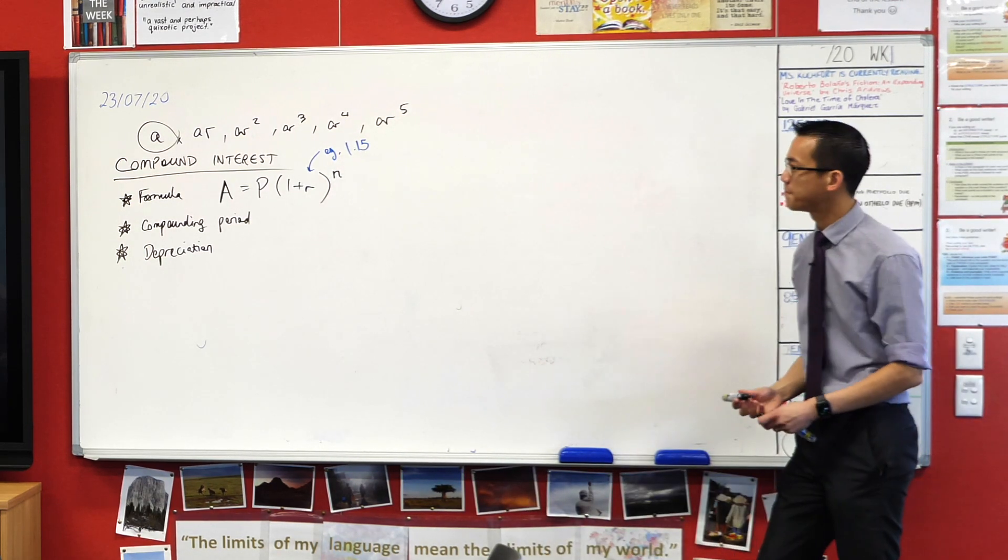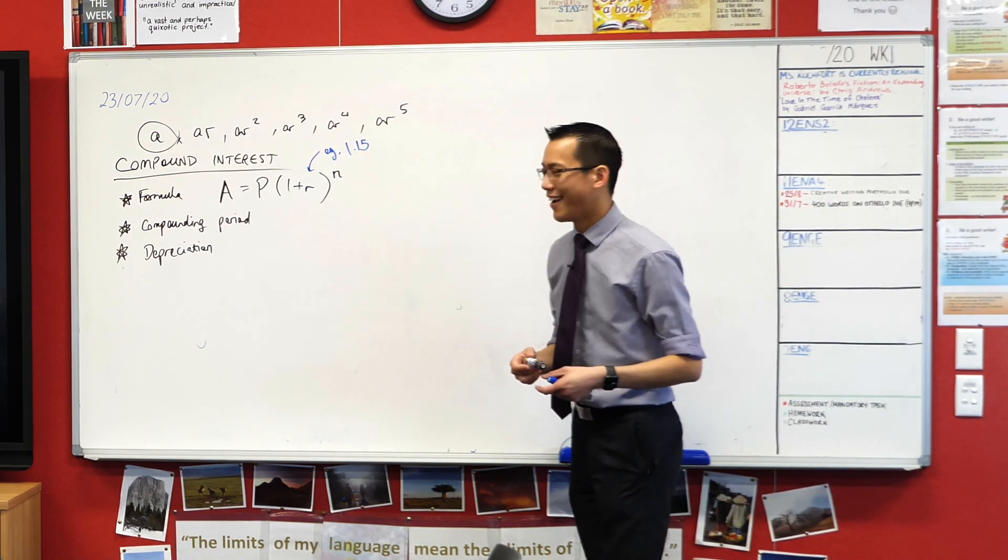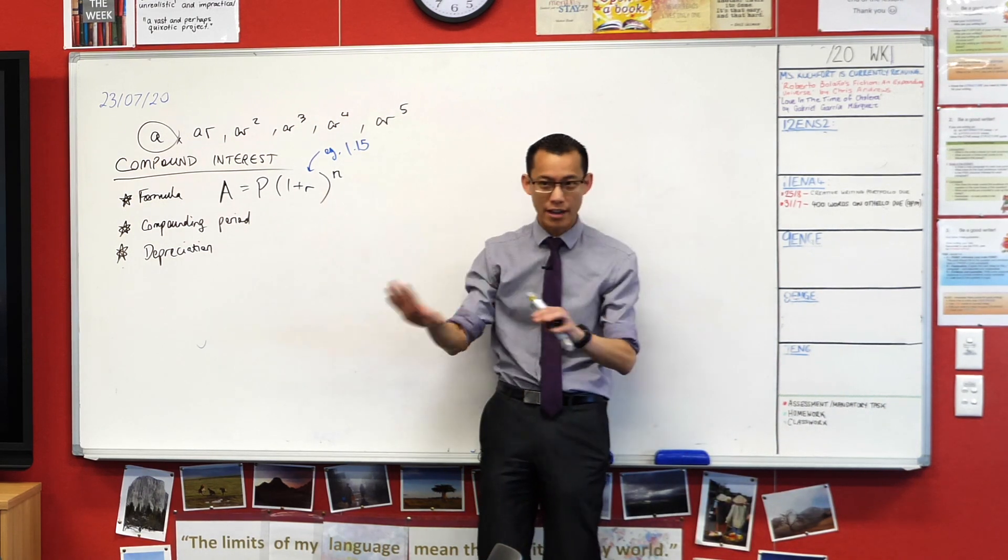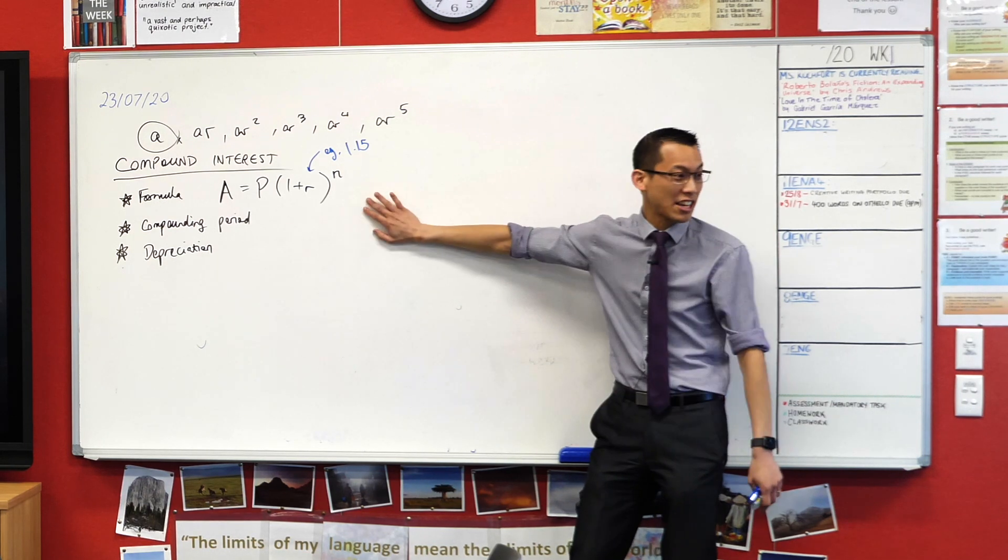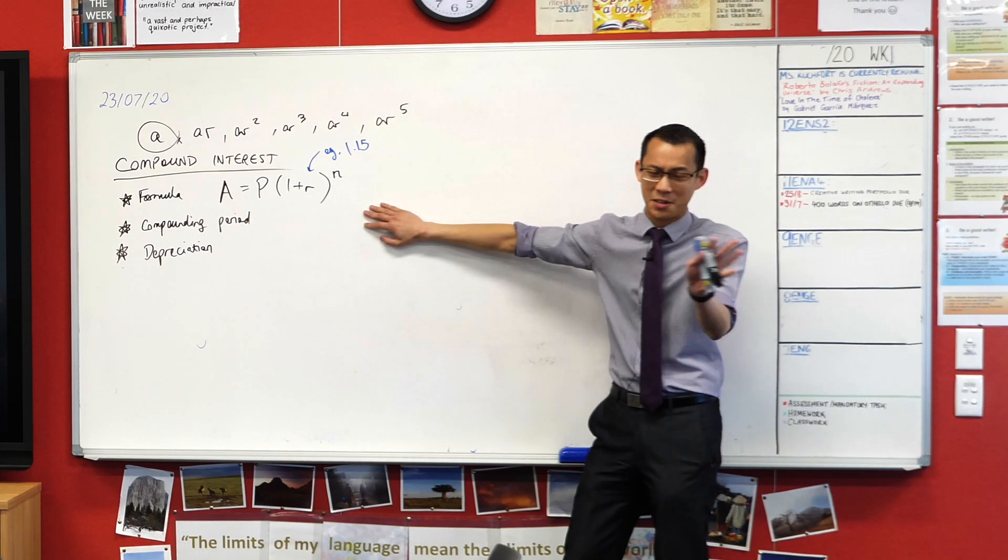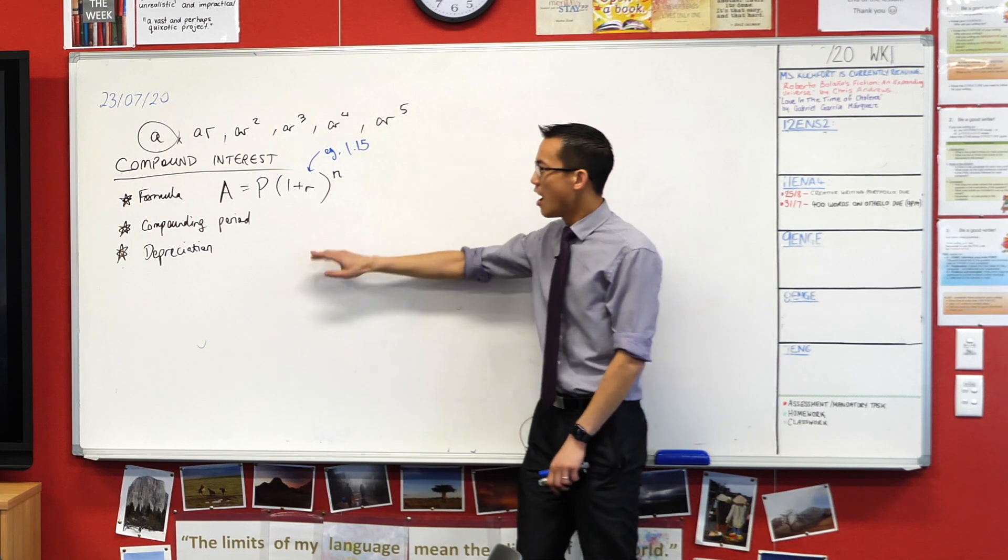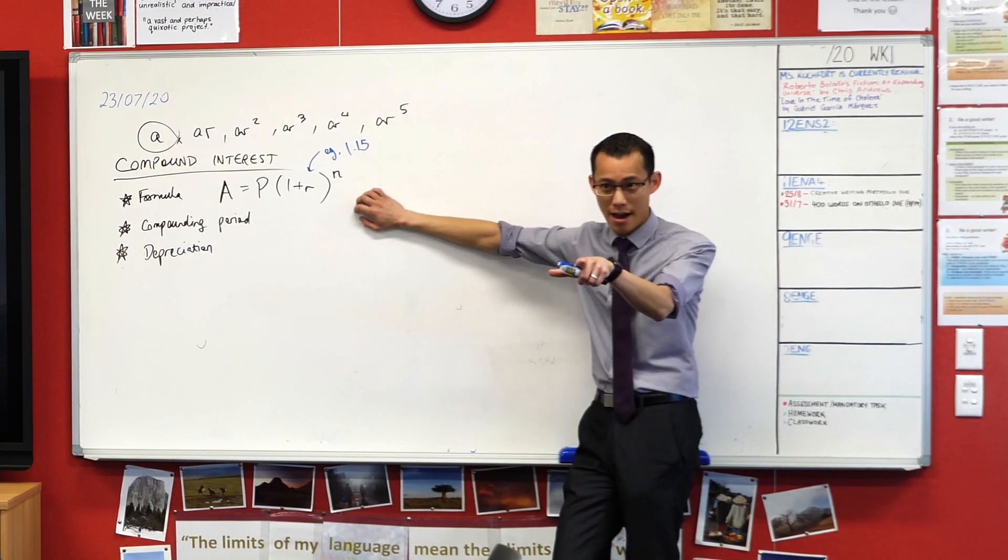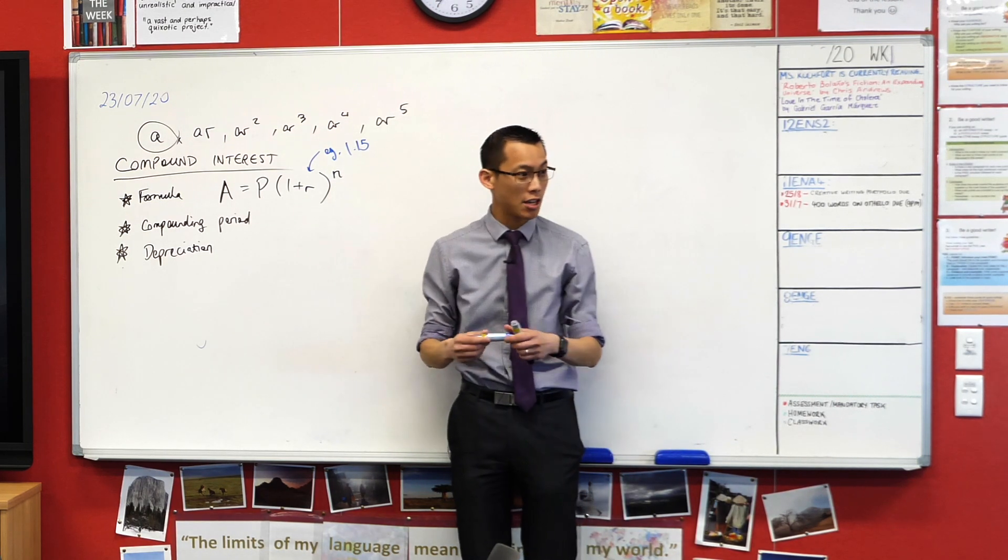This is the basic compound interest formula, which is actually on the reference sheet. But we have to modify this in certain ways based on time. That's where the next point comes in - compounding period. Let's actually think about an example here.